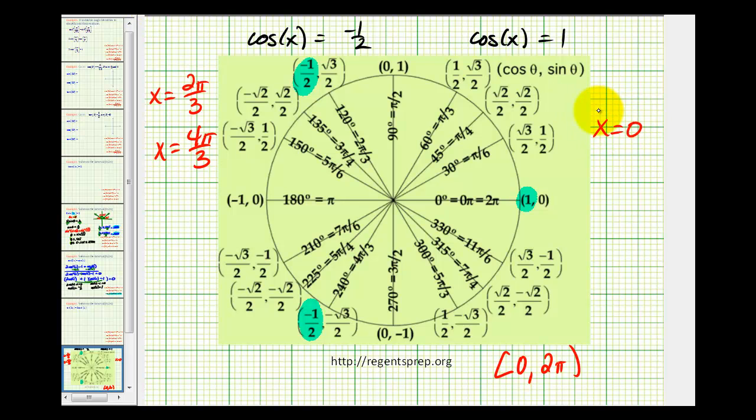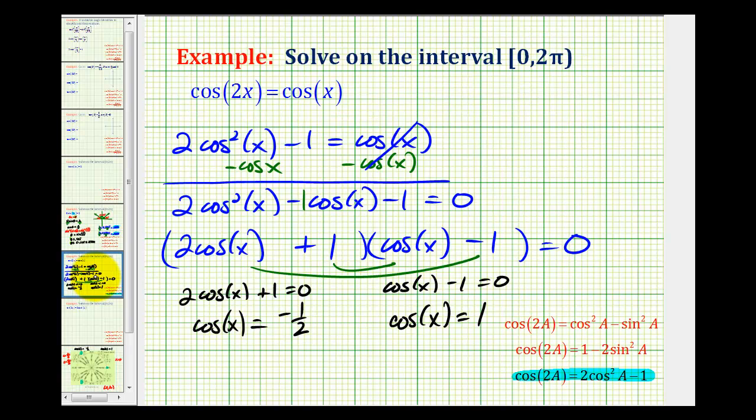Let's record this on the previous screen. Here we had x = 2π/3 or 4π/3 radians, and here we had x = 0 radians. I hope you found this helpful.